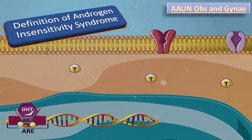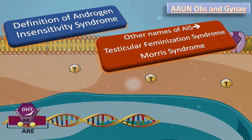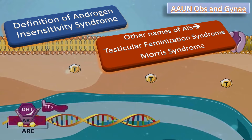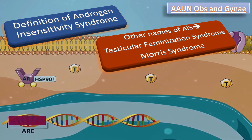What are the other names of Androgen Insensitivity Syndrome? Previously, this condition was called the Testicular Feminization Syndrome due to the erroneous assumption that the testis must be producing a feminizing factor. AIS is also called Morris Syndrome.